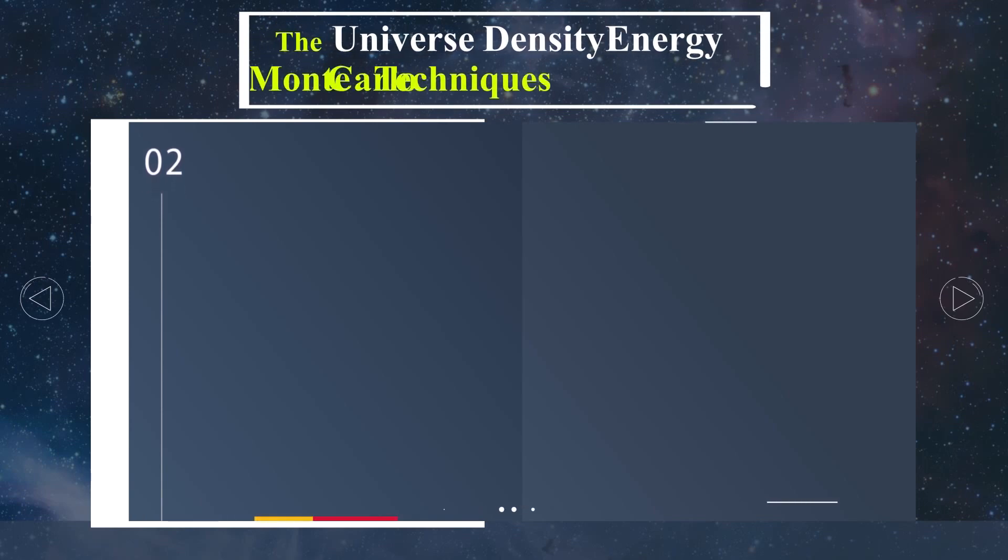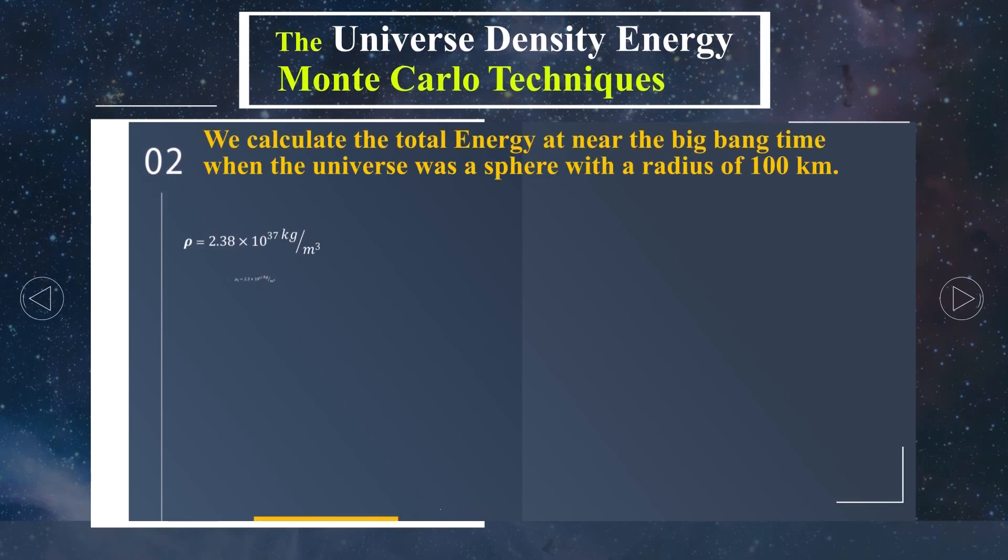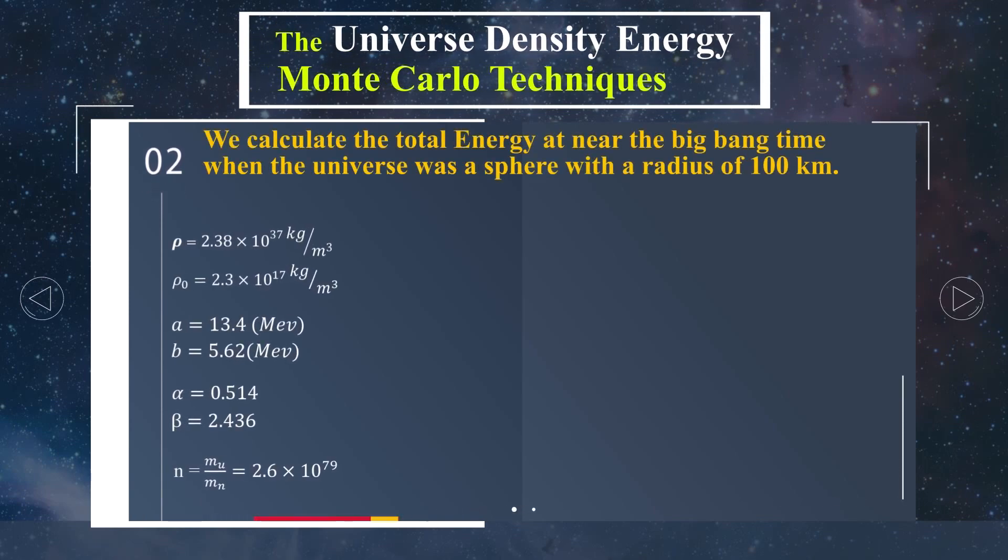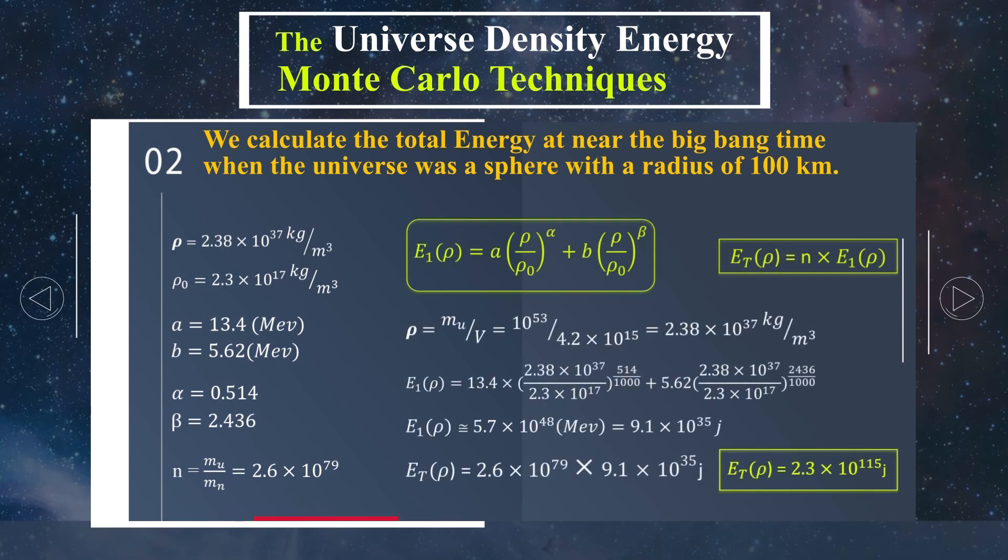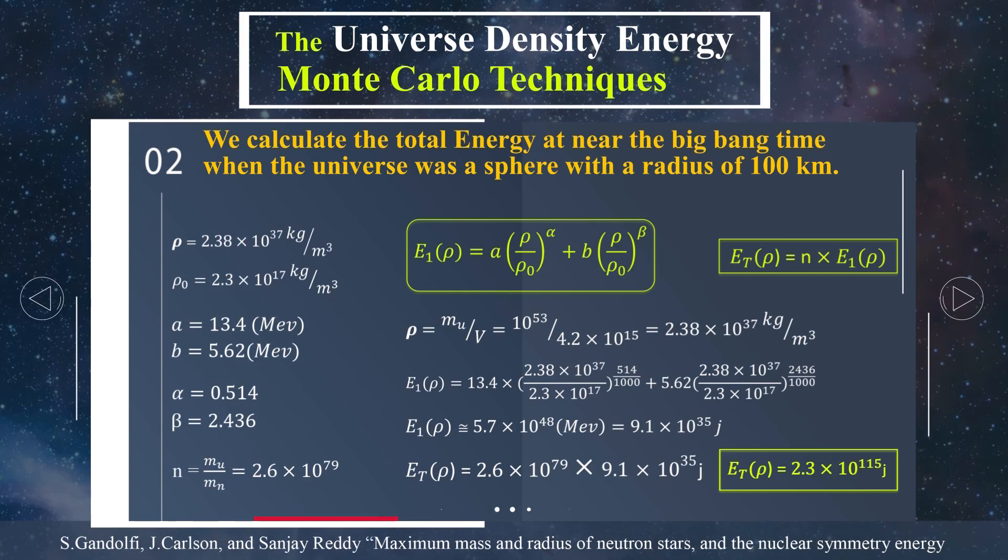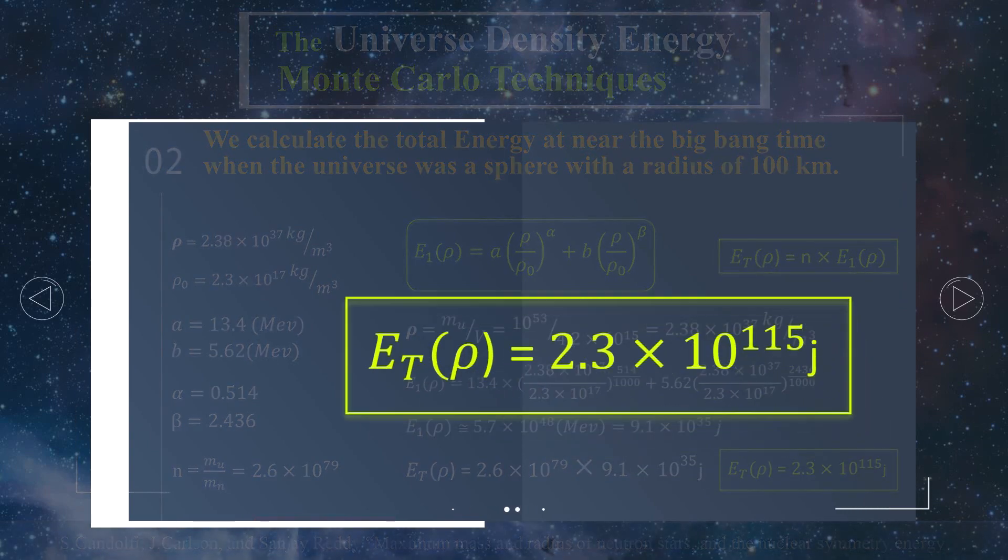Using simple calculations with appropriate approximation, the energy in the moment of Big Bang is 10 to the power of 110 joules to 10 to the power of 120 joules which is very very high.